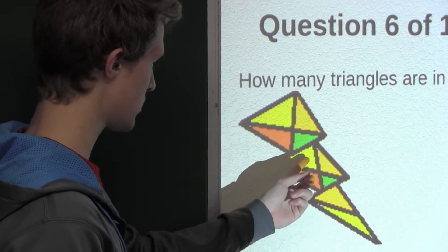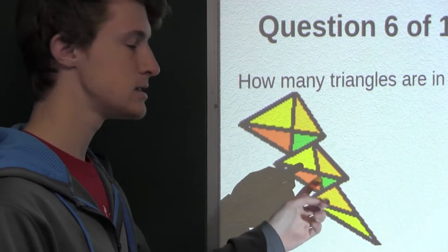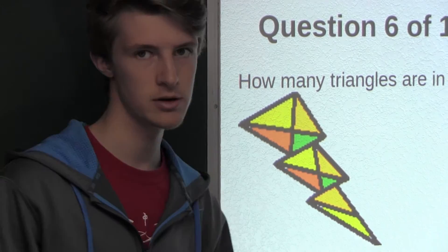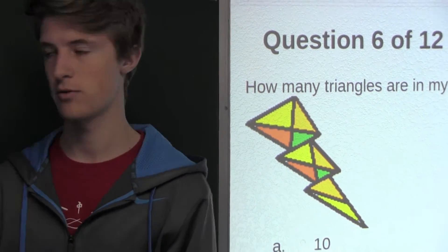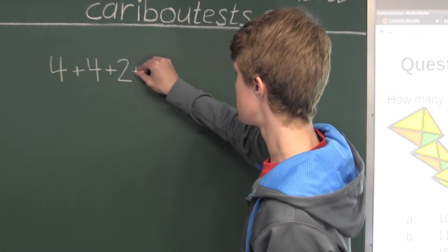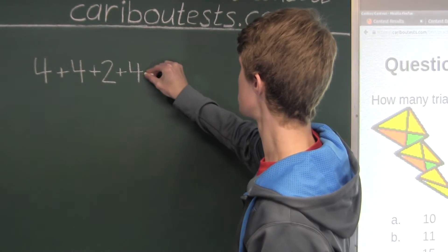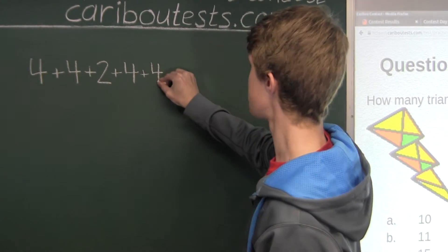And now the second quadrilateral, it would just be the same, since it's just the exact same type of quadrilateral, just smaller. So we would have 4 plus another 4.